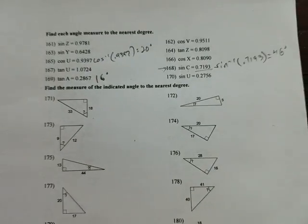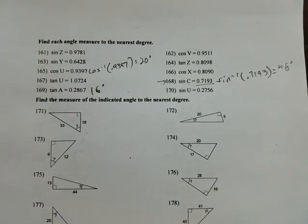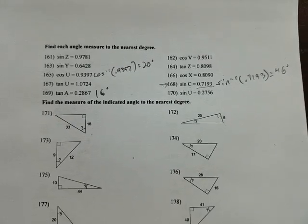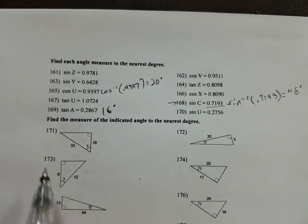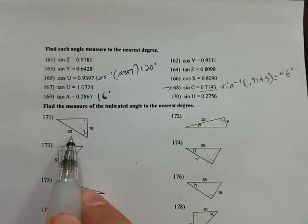Now once we've got our inverse functions figured out and we can find out the angle given the ratio, we're getting the ratio in decimals up here, but we could be given the ratio like a fraction, kind of like what we're used to seeing.